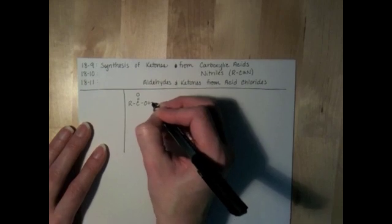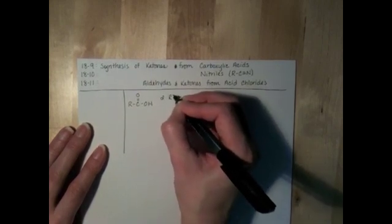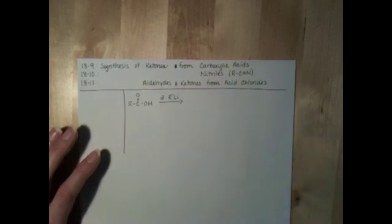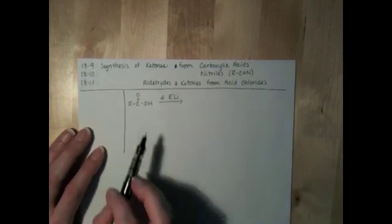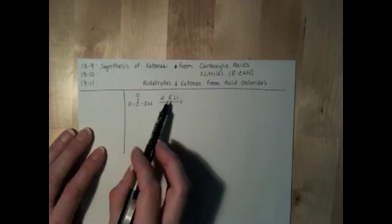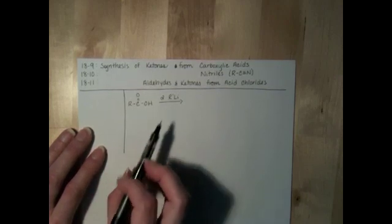I'm going to use for this reaction two equivalents of the organolithium, which I'm going to use R' for the organolithium reagent to distinguish it from the alkyl group that's already present on the carboxylic acid, although they certainly can be the same. They don't need to be different.